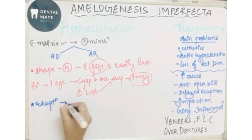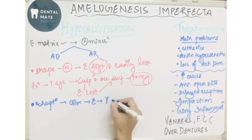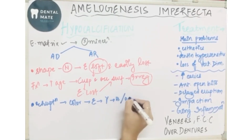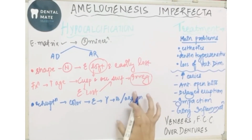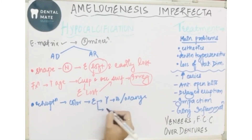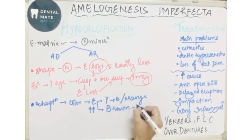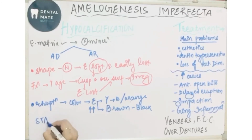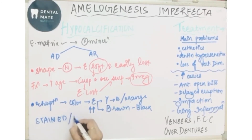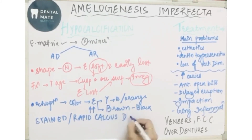The color of the enamel at eruption is yellow-brown or orange. But with increase in age, it turns brown-black in color. This is because staining occurs, or there may be rapid calculus deposition.